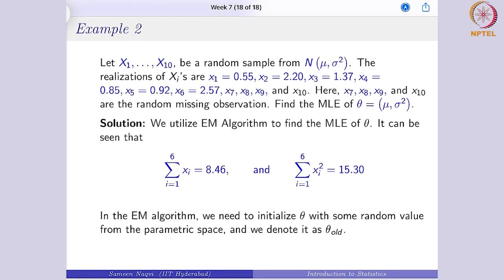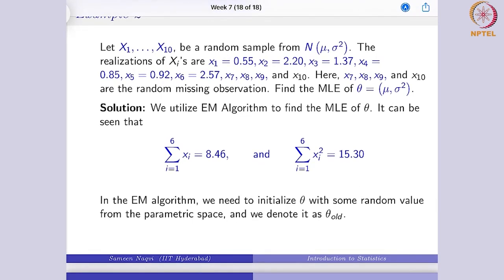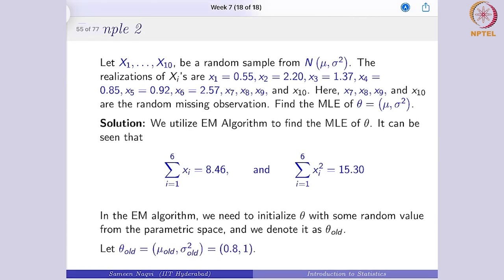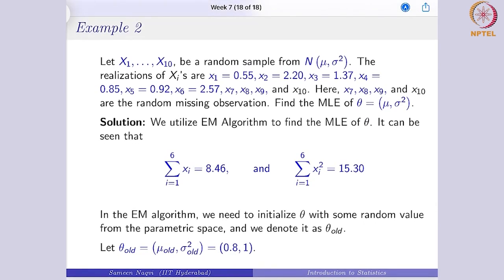In the EM algorithm we need to initialize theta with some random value from the parametric space. We denote it as theta old. In this case, let us assume that theta old — the parameter estimates — is mu = 0.8 and sigma² = 1, because mu can range from minus infinity to infinity and sigma is positive. Since these are small observations, we can start with 0.8 and 1.